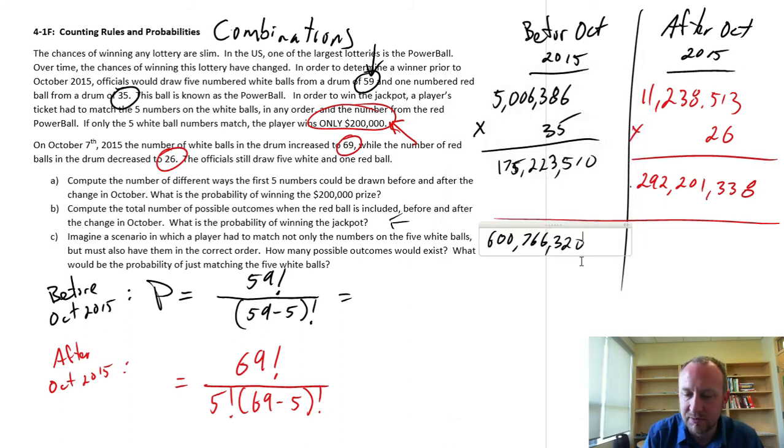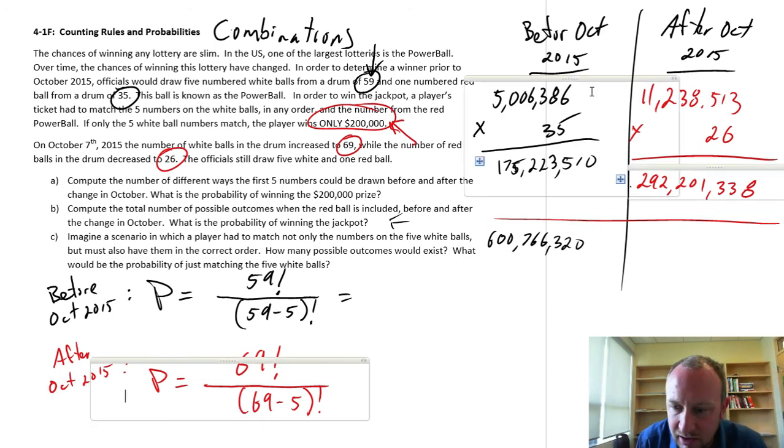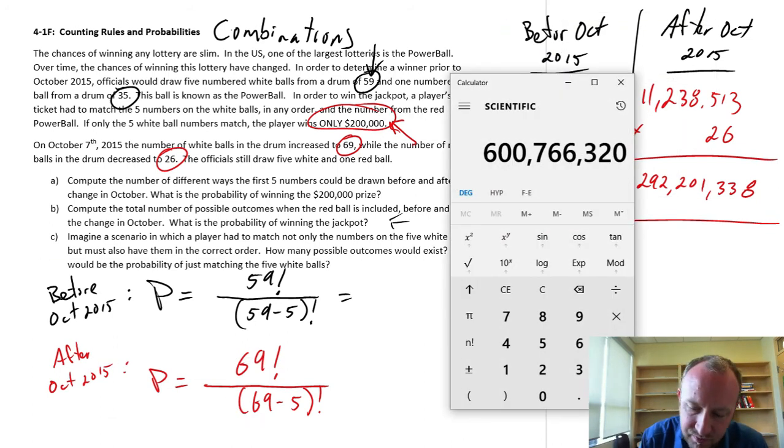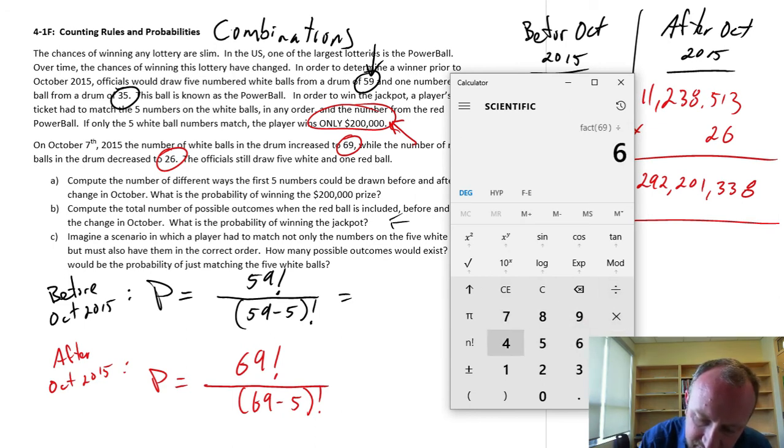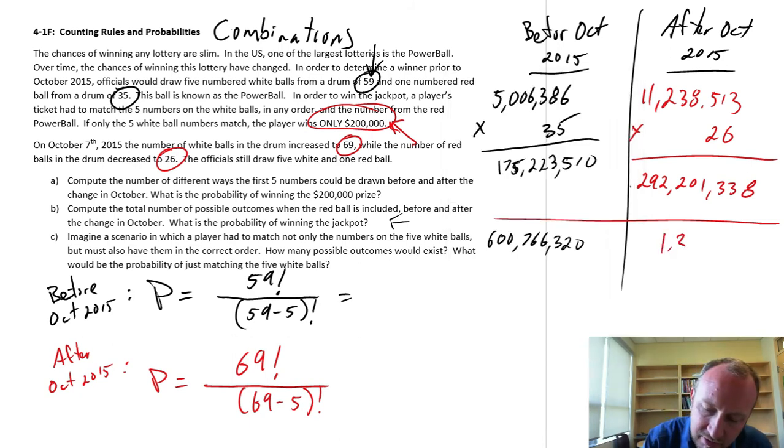Wow. So it would be pretty hard to win even that $200,000 prize. If we were to adjust this formula for permutations after that change, now we're going to have 69 factorial divided by 64 factorial. Oh, 1 billion. My goodness. Let's just call that 1.3 billion.